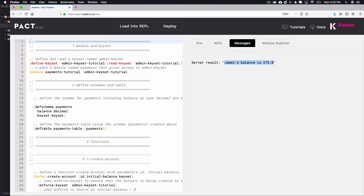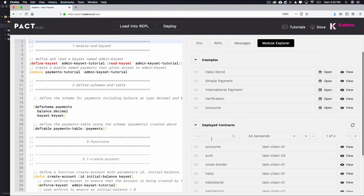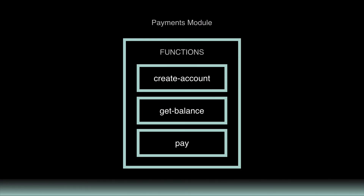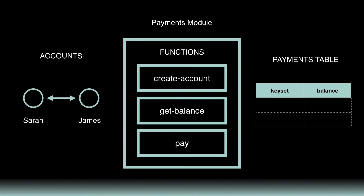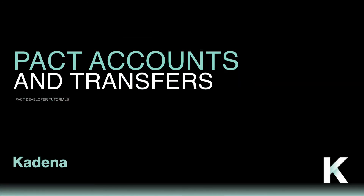If you'd like, you can find this in the module explorer, call its functions, or use this code to begin working on a brand new project. That wraps up this tutorial. Throughout this tutorial, you built a smart contract that allows users to create accounts, view account balances, and make payments between accounts. This is an important function of smart contracts and will set you up to create more complex applications using accounts and transfers. Take some time to experiment with these new ideas, and when you're ready, I'll see you in the next tutorial.